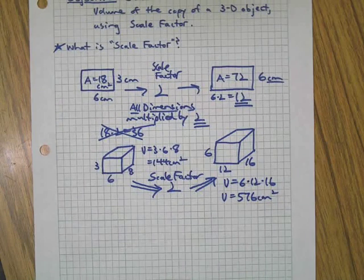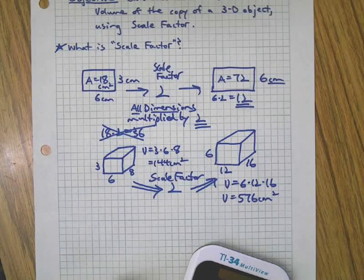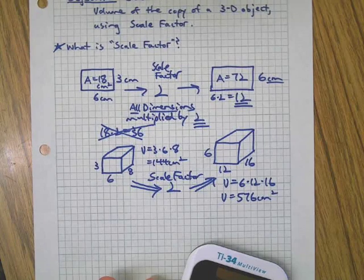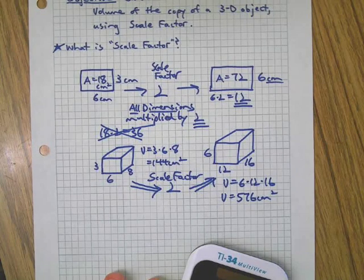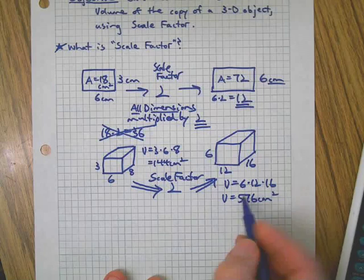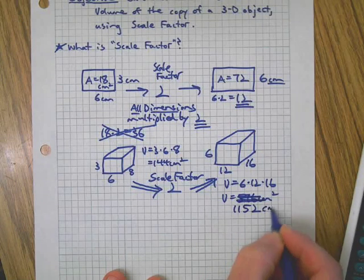Check your math here — what happened? The original was 3 times 6 times 8, which is 144. I doubled everything: 6 times 12 times 16. Did you catch my mistake? I hope you did.